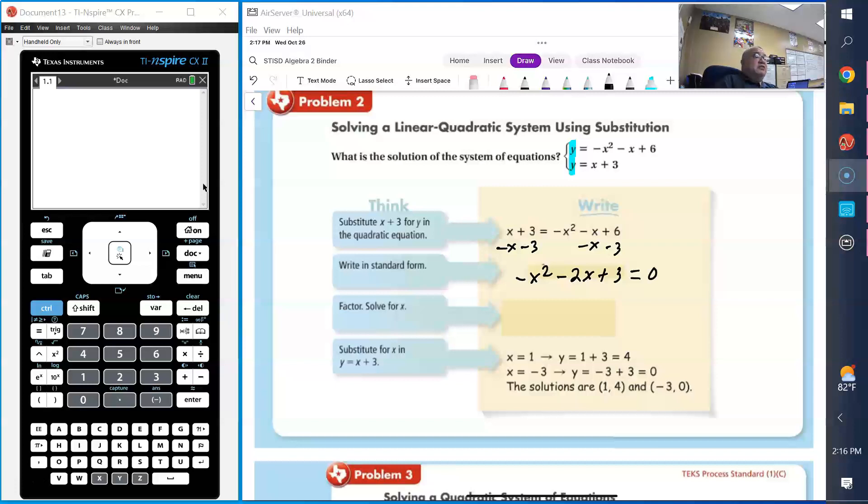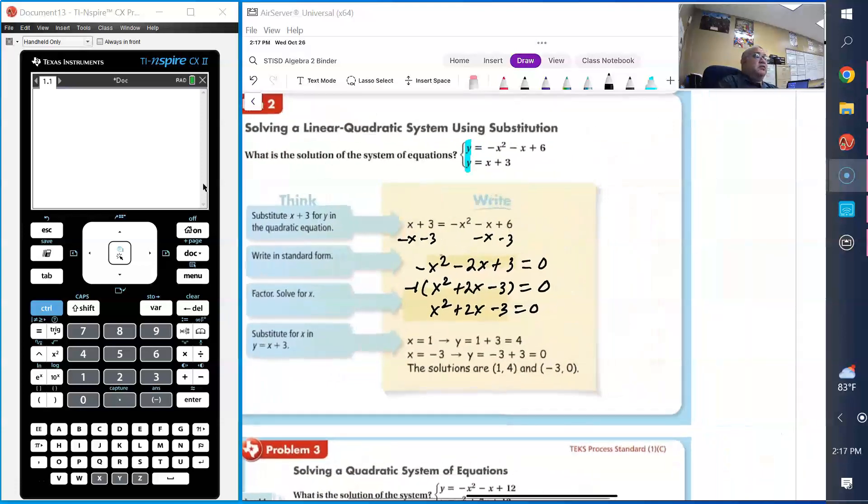I'm going to factor out a negative 1. So when I factor out a negative 1, it's going to be x squared plus 2x minus 3 equals 0. Let's find the factors of negative 3 that will add up to 2. We know that it's going to be x minus 1 times x plus 3 equals 0.